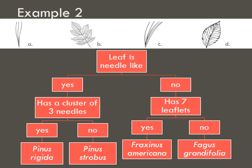For our last example, we have leaves. Again, we can pick any one of these — we'll go with B. We go to our first description: 'Leaf is needle-like.' Looking at B, it is not needle-like, so I would say no. The next description then says 'has seven leaflets.' Let's count: one, two, three, four, five, six, seven — yes, it has seven leaflets.